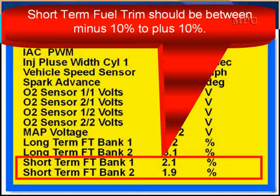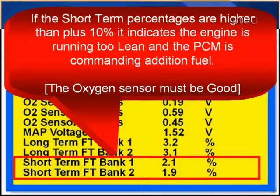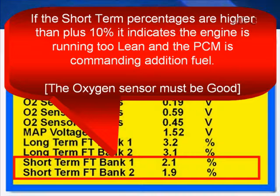Short-term fuel trim should be between minus 10 and plus 10 — that's constantly moving to correct for all the little minor fuel control problems you see on a normal running engine. If the short-term percentages are higher than plus 10% or minus 10%, it indicates the engine is running too lean or too rich. Higher than plus 10% means the engine is running too lean and the PCM is commanding additional fuel.